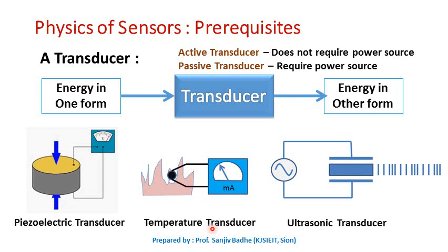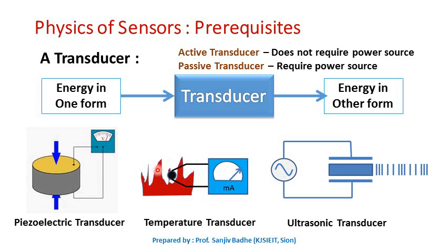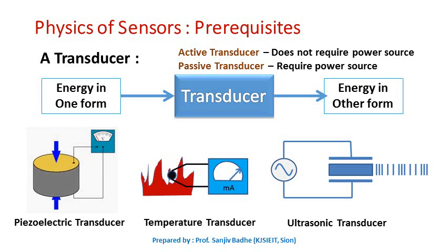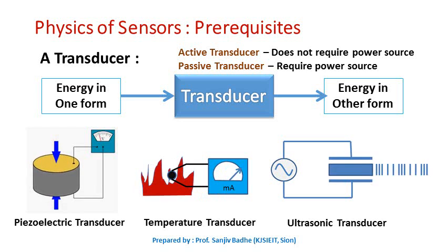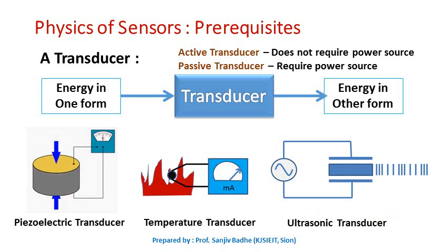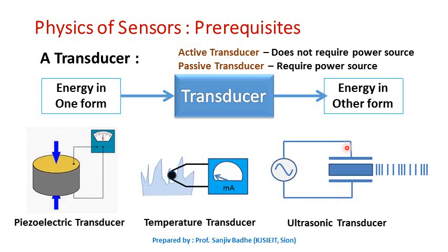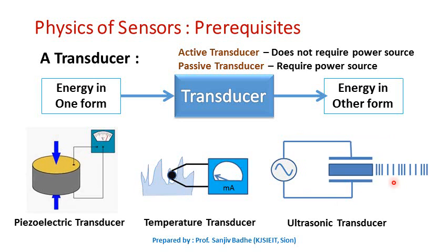Then we have a temperature transducer, which is a sensor that senses changes in temperature and accordingly produces changes in the output current. Then we have an ultrasonic transducer which takes an alternating electrical signal as input and converts it into a sound wave of desired frequency.